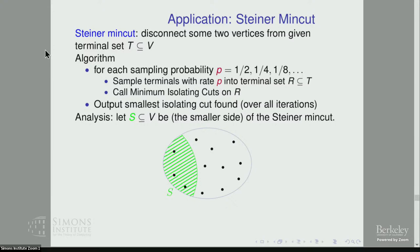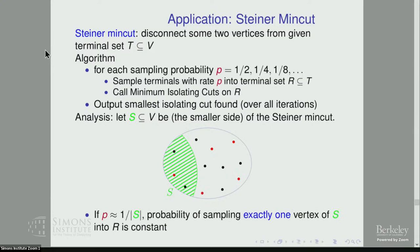We show that with good probability, this gives the Steiner min cut. For the analysis, assume we know the Steiner min cut — say it's the set S. The key observation is that if we sample with probability roughly one over the size of S, then the probability of sampling exactly one vertex in S is a constant, by a simple probability argument. In expectation we get one sampled vertex when we use probability one over size of S. With good probability we'll have exactly one, and when this occurs the Steiner min cut is a valid isolating cut — isolating cuts are in fact Steiner min cuts — so the isolating cut for that sampled terminal will be exactly the Steiner min cut.